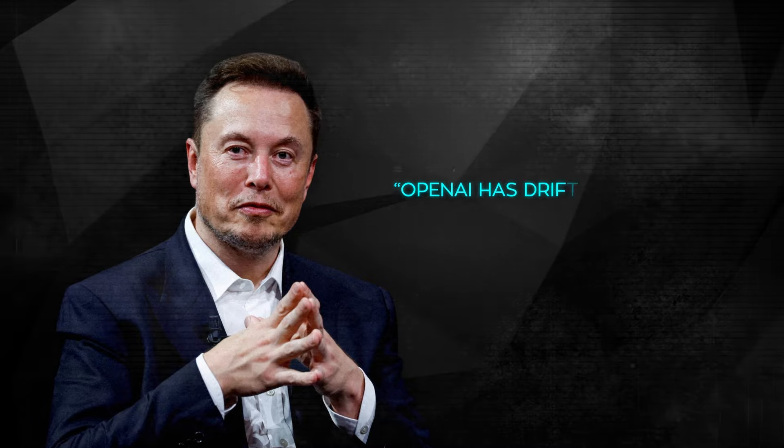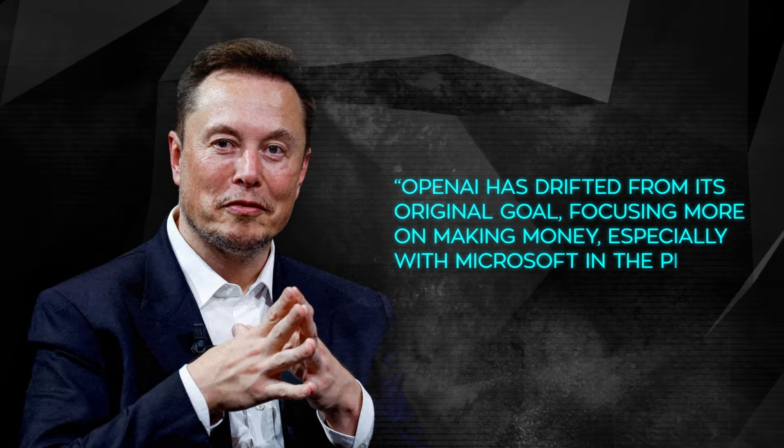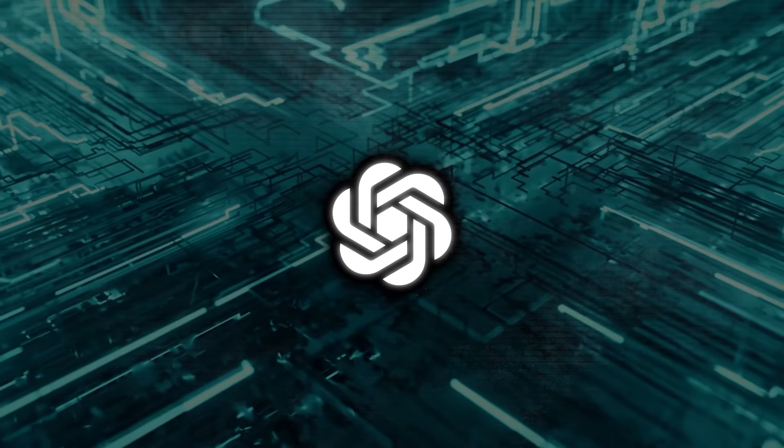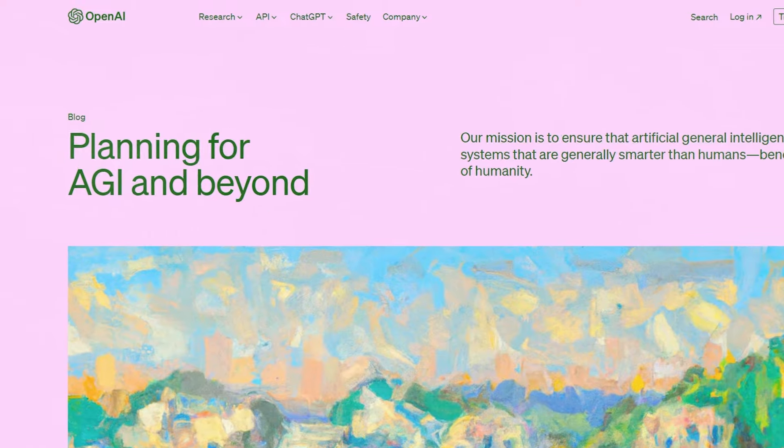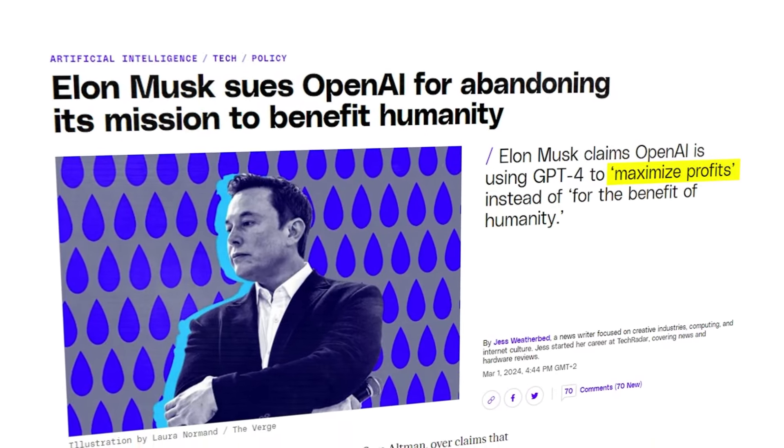The reason? He says OpenAI has drifted from its original goal, focusing more on making money, especially with Microsoft in the picture. OpenAI was meant to be this open-source dream, working on AGI to tackle big challenges. But Musk believes this vision is fading, all for profit.